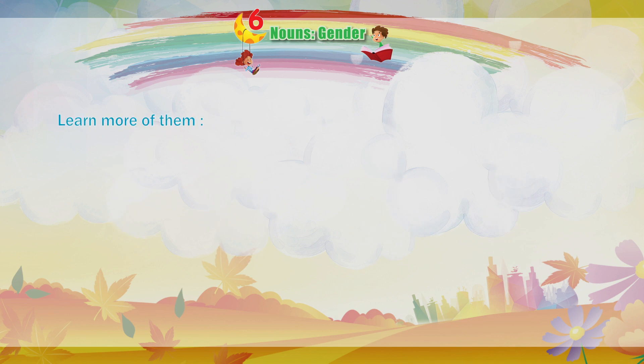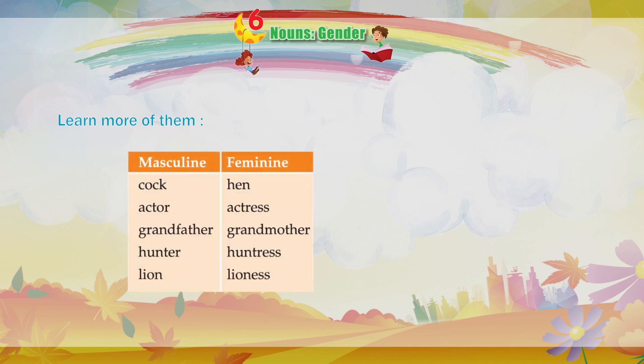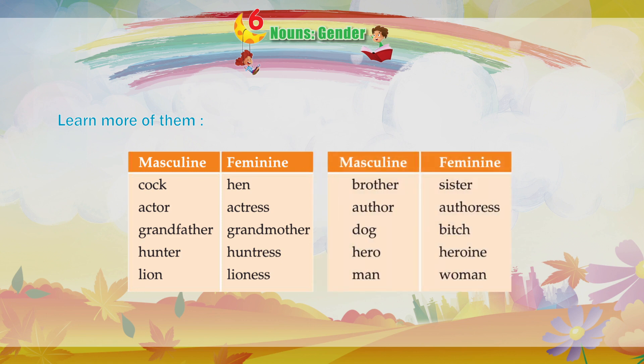Learn more of them. Masculine and feminine pairs: Cock – Hen. Actor – Actress. Grandfather – Grandmother. Hunter – Huntress. Lion – Lioness. Brother – Sister. Author – Authoress. Dog – Bitch.